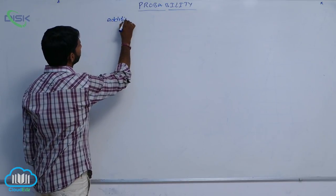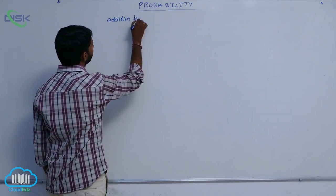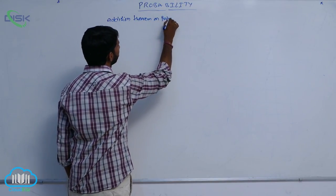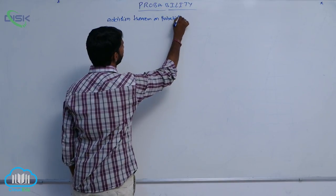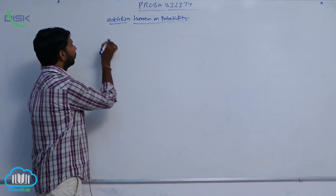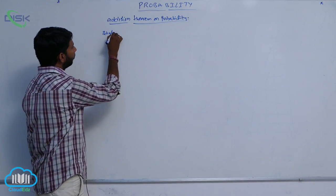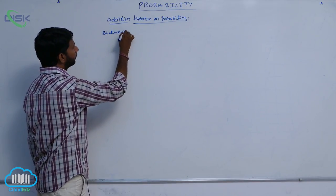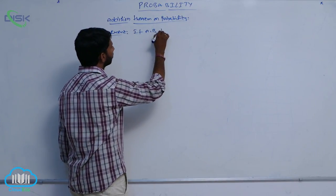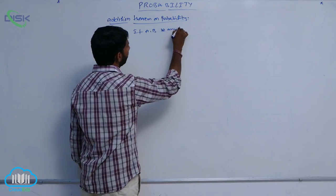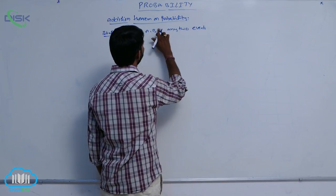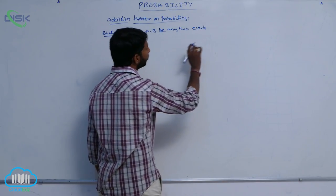Addition Theorem on Probability. Statement of the Addition Theorem: If capital A, capital B are any two events in a sample space,